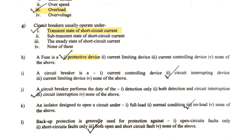The next question: a circuit breaker is — a current controlling device, current interrupting device, current limiting device, or none of the above? A circuit breaker cannot control or limit any kind of current. It opens up during a faulty condition to isolate the healthy segment from the faulty one. It interrupts the flow of current to give protection. So a circuit breaker is basically a current interrupting device, and option two is the correct answer.